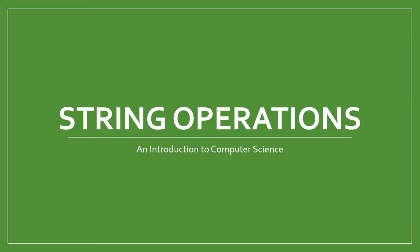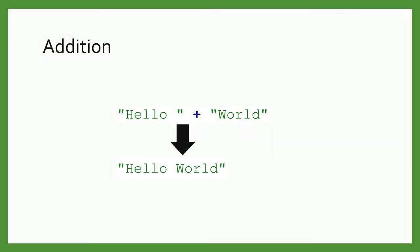Let's learn about string operations. Like numbers, you can add two strings together. This puts them side by side in a single new string. This is sometimes called concatenation.